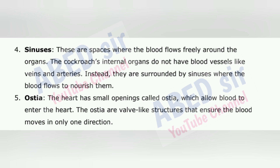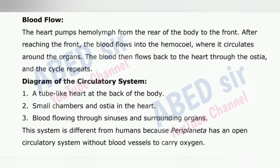4. Sinuses: These are spaces where the blood flows freely around the organs. The cockroach's internal organs do not have blood vessels like veins and arteries. Instead, they are surrounded by sinuses where the blood flows to nourish them. 5. Ostia: The heart has small openings called ostia, which allow blood to enter the heart. The ostia are valve-like structures that ensure the blood moves in only one direction. 6. Blood flow: The heart pumps haemolymph from the rear of the body to the front. After reaching the front, the blood flows into the haemocoel, where it circulates around the organs. The blood then flows back to the heart through the ostia and the cycle repeats.